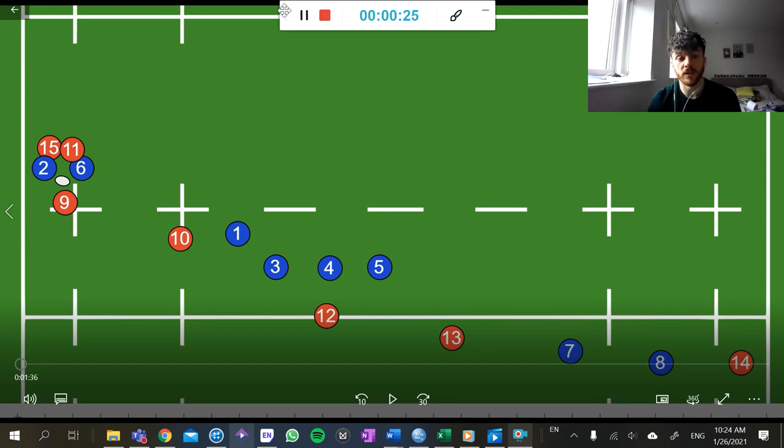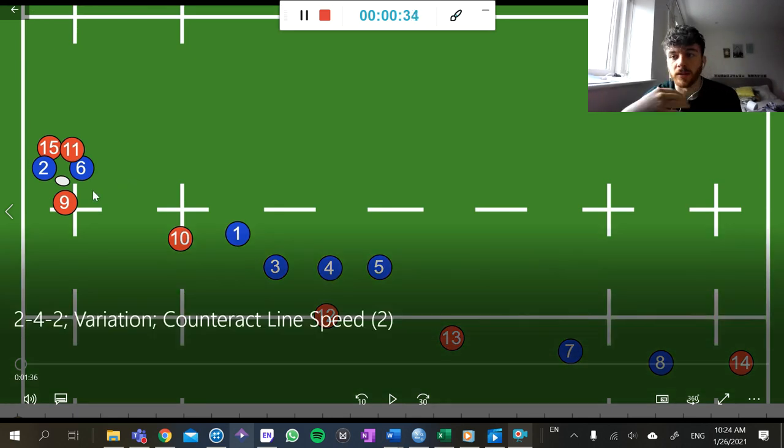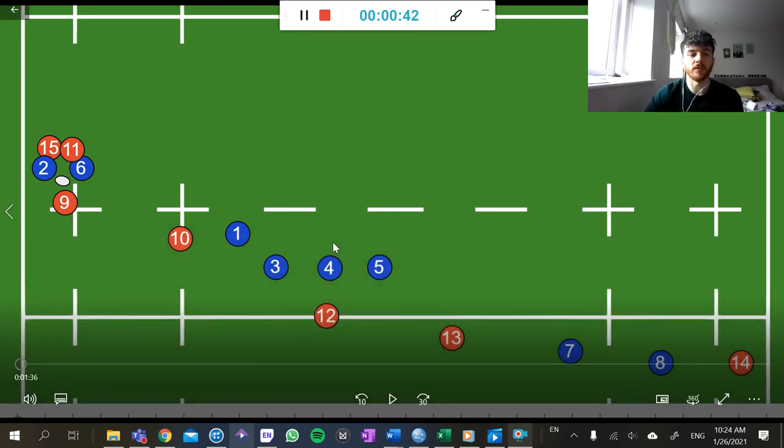One of the reasons that the 2-4-2 system may invite a lot of line speed is that when you're playing continuously from your 9 to your 10 and then your 10 to your pod and you're never playing off 9, there's going to be a lot of time where the ball is in the air.